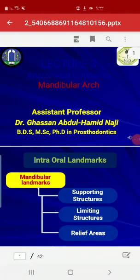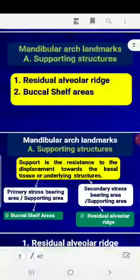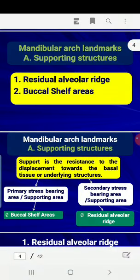Assalamu alaikum. Lecture 3 is about the anatomical landmarks of the mandibular arch. The intraoral mandibular landmarks include: supporting structures, limiting structures, and relief areas. The supporting structure is the residual ridge or buccal shelf area.